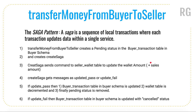The Saga pattern is a sequence of local transactions where each transaction updates data within a single service. Step by step: 'Transfer Money from Buyer to Seller' creates a pending status in the buyer transaction table. 'Create Saga' sends a command to the seller wallet table to update the wallet amount. Create Saga then receives either an 'update pass' or 'update fail' message. If update passes, the buyer transaction table is updated, the wallet is decremented, and the pending status is removed. If update fails, the buyer transaction table is updated with a cancelled status.